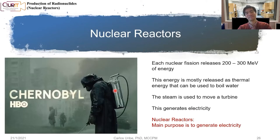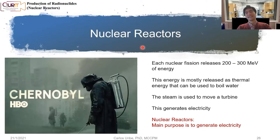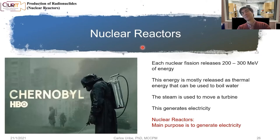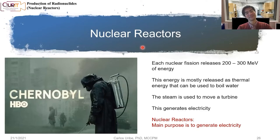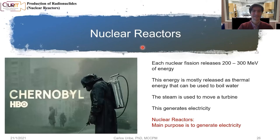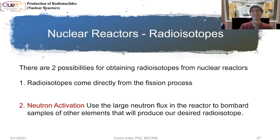Things can go wrong — you've probably heard about what happened in Chernobyl in the 1980s, and there's an interesting series about it. Each neutron fission releases around 200 to 300 MeV of energy. This energy is mostly used as thermal energy to boil water, producing steam that moves a turbine to generate electricity. The main purpose of those reactors is to generate electricity; producing radioisotopes for nuclear medicine is a secondary purpose.